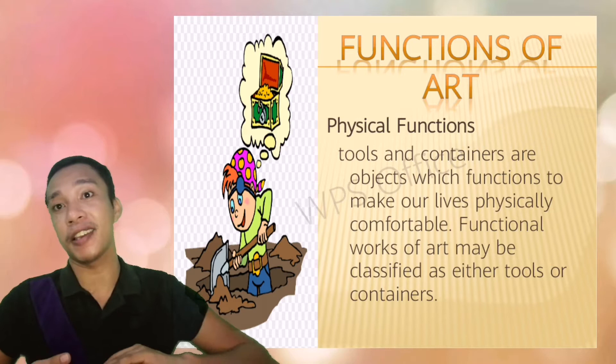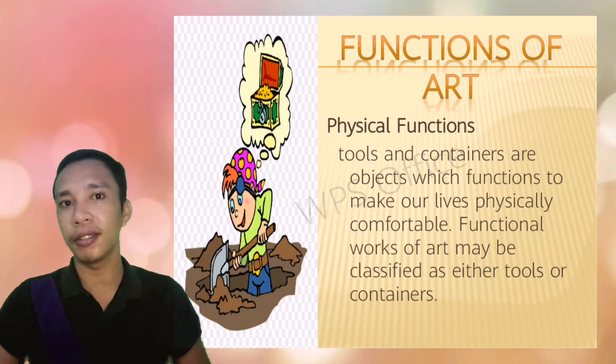It could be a screwdriver or a simple glass that you use every time you drink water — these are what we call the physical functions. Take this ball pen, for example. This is actually a creation of art. It's a physical art because we can touch it — it's tangible. It's a tool. We use it for writing notes, exams, or messages. It helps make our lives easier.